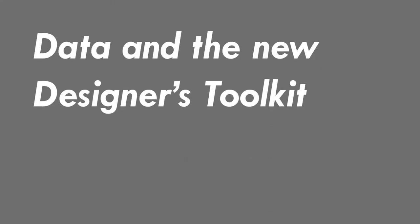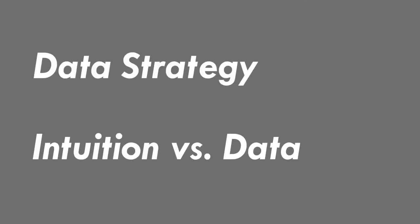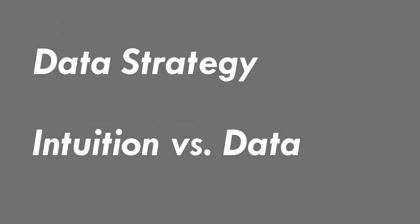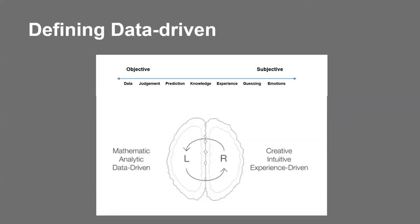Today's focus is on data strategy, but mostly on intuition versus data — mainly drawing from Chapter 2 of Randy's book 'Convergence.' So Randy, what is the relationship between data and intuition?